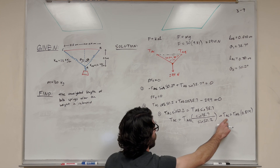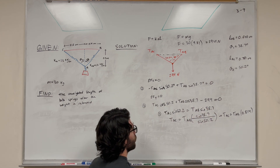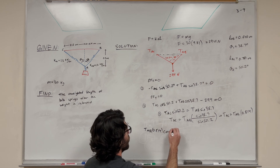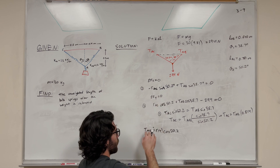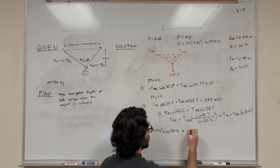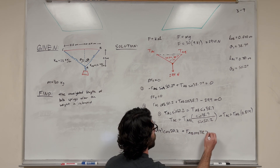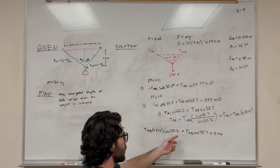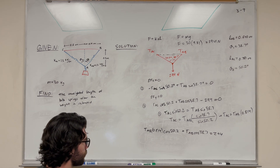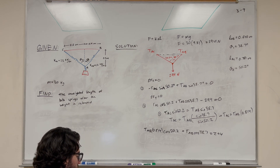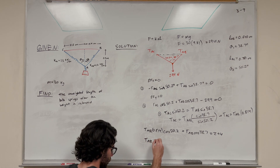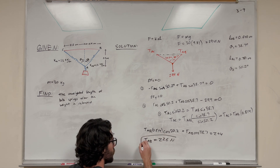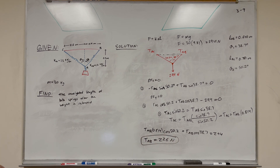Now we substitute into the second equation. Wherever we see tension AC, we plug in tension AB times 0.814. So we get: tension AB times 0.814 times cosine of 50.2, plus tension AB times cosine of 38.7, equals 294. Now we have one equation and one unknown. Solving this — multiply through, add, and divide — gives tension AB equal to 226 newtons.